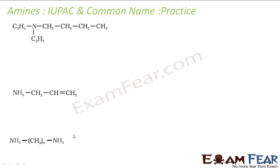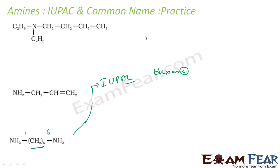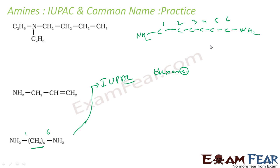Let us write the IUPAC name for this compound. If you see, this is a 6-carbon-long chain, so it will be hexane. Please note the E is retained. At positions one and six, if you number the compound 1-2-3-4-5-6, I have an NH2 group here and an NH2 group here. So at positions 1 and 6 I have amine groups, giving hexane-1,6-diamine. This will be the IUPAC name for this compound.